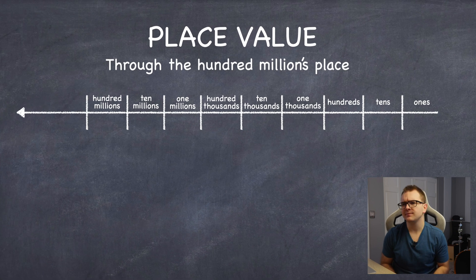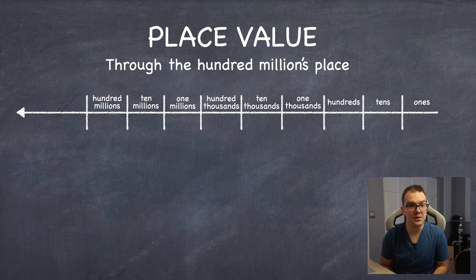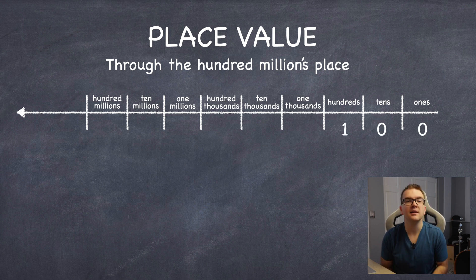Like, for example, we can't technically have 10 groups of 10 because it would just be 100, right? Because 10 groups of 10, which is 10 times 10, is 100.